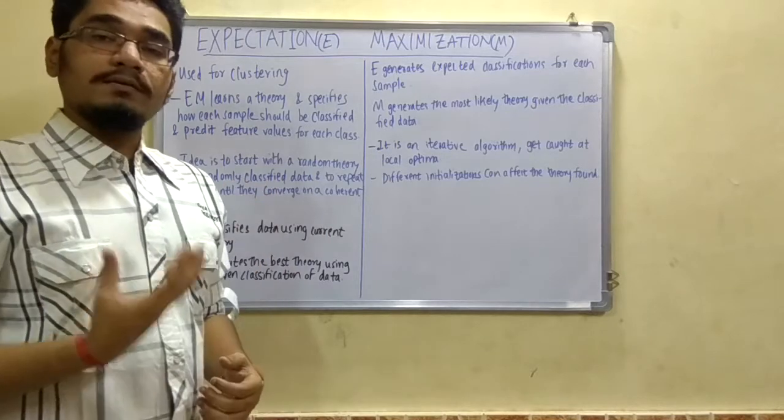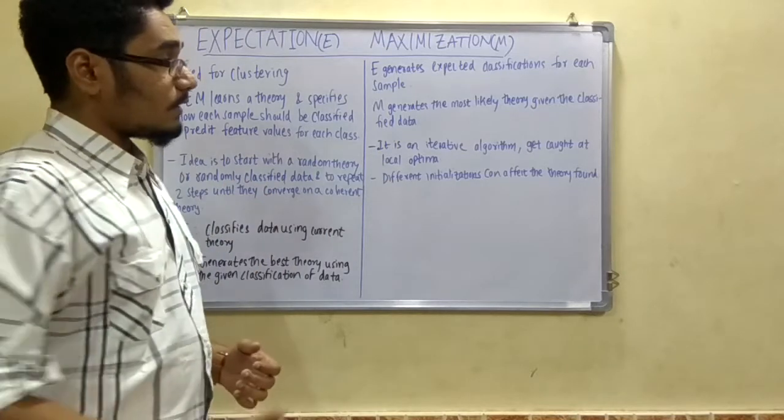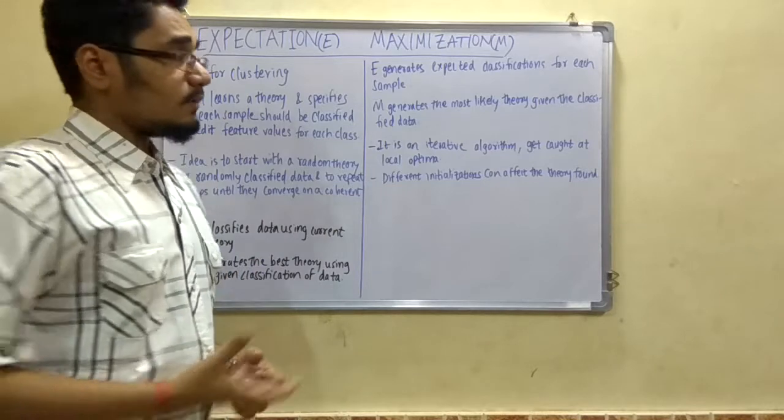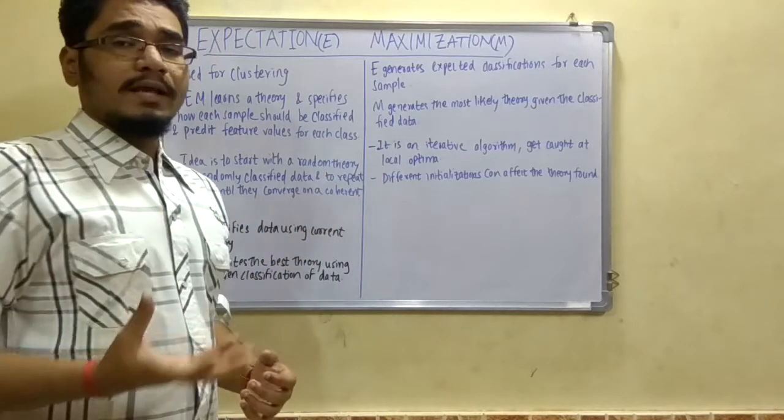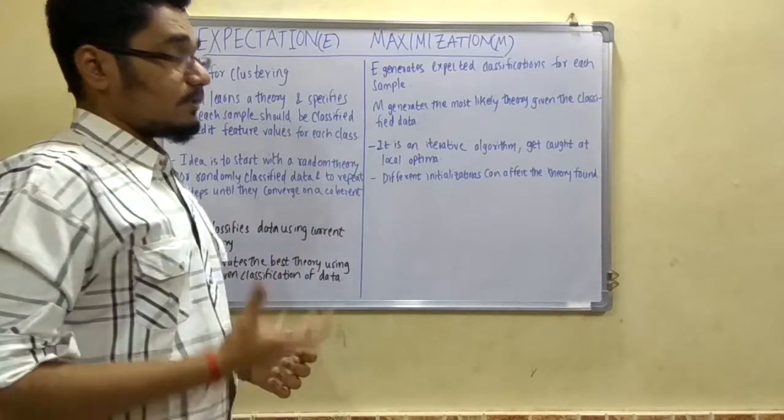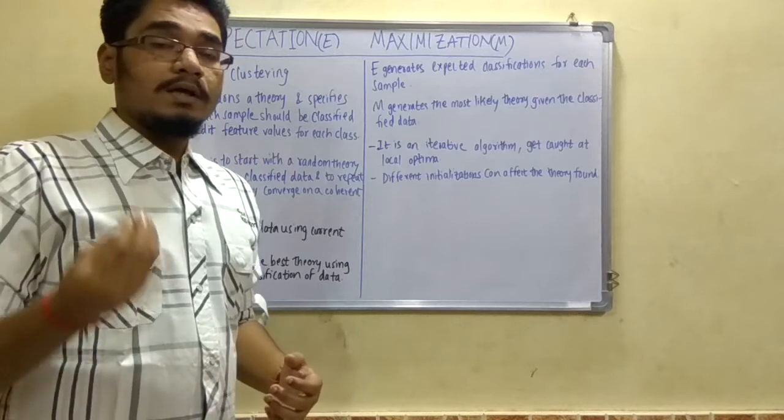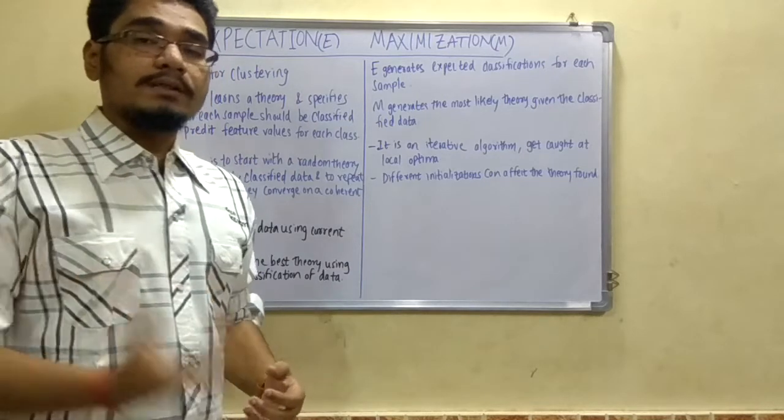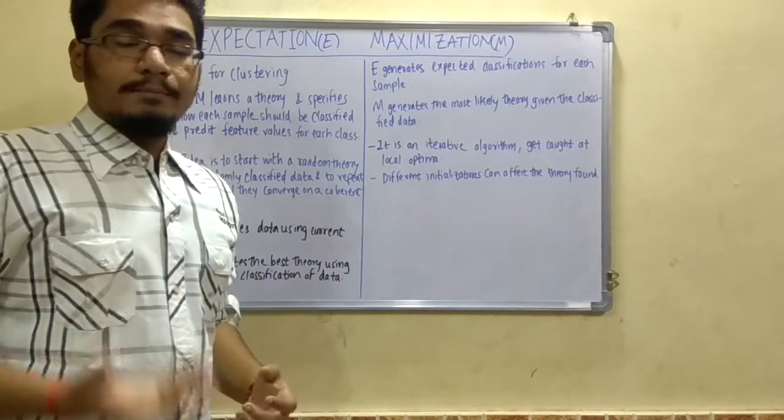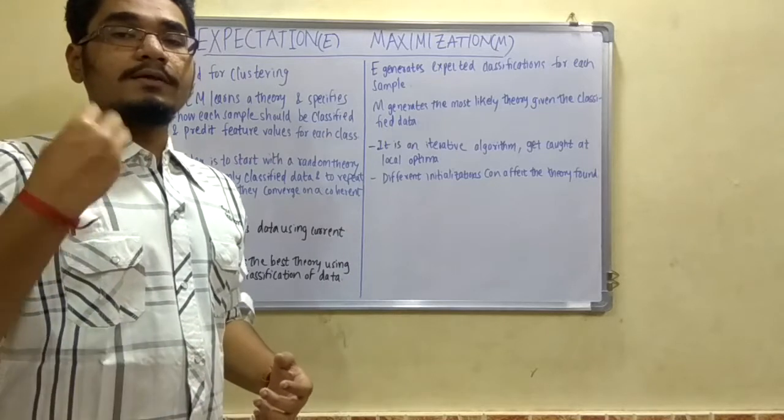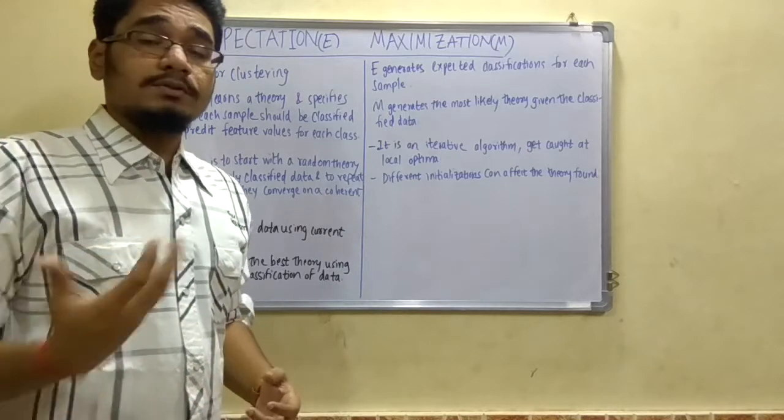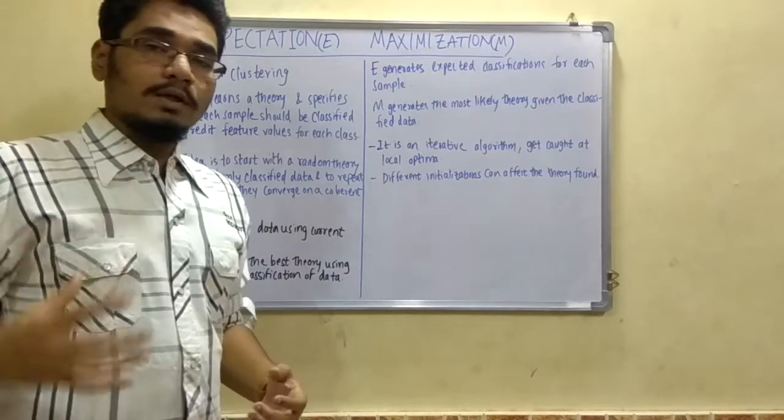This EM algorithm is an iterative algorithm and one drawback is that it can get caught at the local maxima, which was a problem of hill climbing and most other algorithms. Hill climbing ultimately overcame this by using certain solutions to tackle the local optima or local maxima problem.